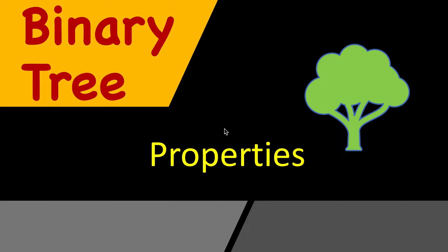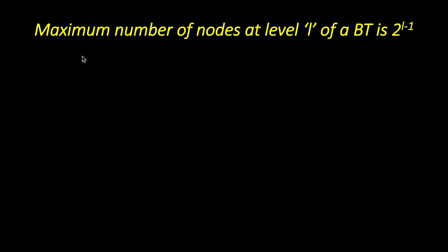Let's look at some of the properties satisfied by all binary trees. The first property is that the maximum number of nodes at level L of a binary tree is 2 raised to the power L minus 1. We are required to find the maximum number of nodes, not minimum. The maximum number of nodes at a level occurs when that level is completely filled. When a binary tree is completely filled, we fill all possible positions. Here, level starts from number 1.